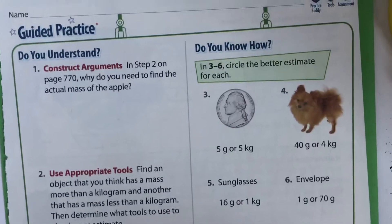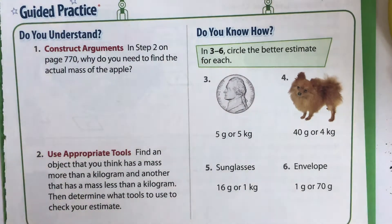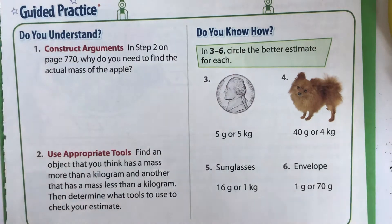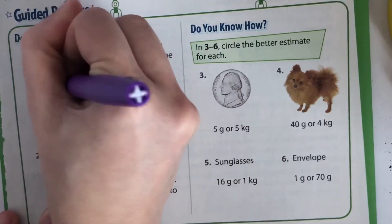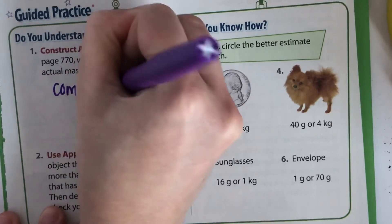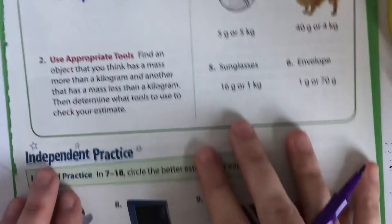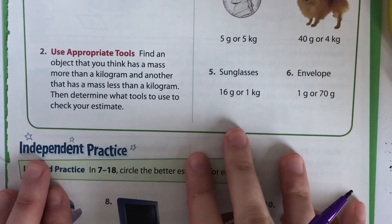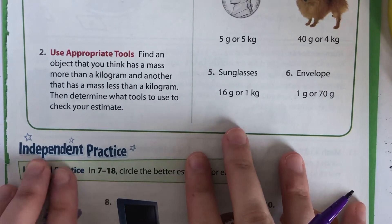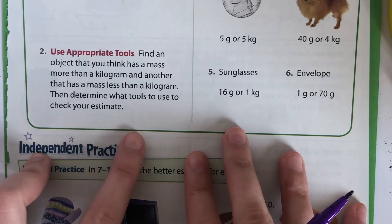In step 2 on page 770, why do you need to find the actual mass of the apple? Because we are comparing the sizes and we need to know the estimates. You can find an object that you think has a mass more than a kilogram and another that has a mass less than a kilogram, then determine what tools to use to check your estimate.